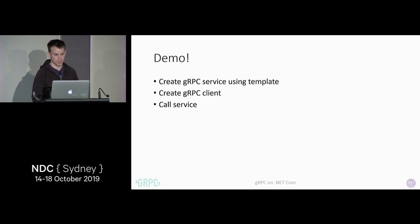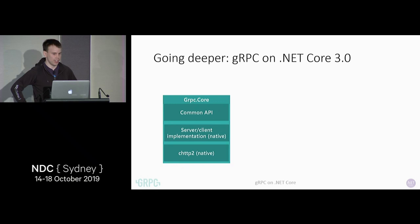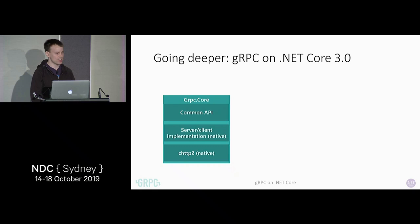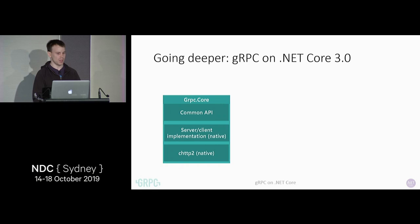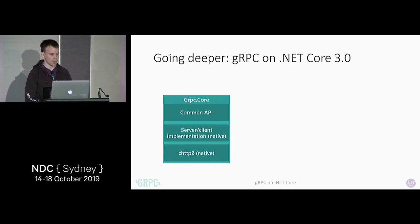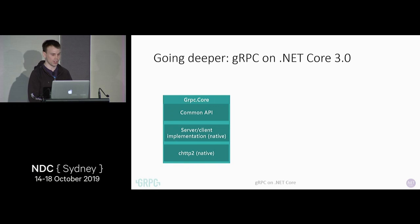Let's go a bit deeper on what we've created in .NET Core 3 for gRPC. gRPC isn't new on .NET either — we already had this NuGet package called gRPC.Core, which has been around since 2015 doing a great job. There are a couple of issues with it though. This implementation is kind of a thin .NET wrapper around a native implementation — the server, client, and HTTP/2 library are implemented in native C rather than C#. That has downsides around performance due to .NET interop overhead. Also all those native binaries are quite large — this is about 50 megabytes in size.